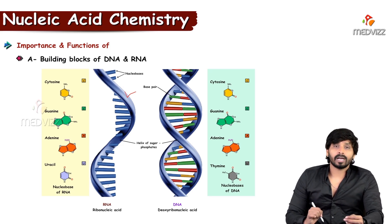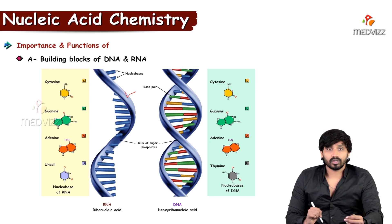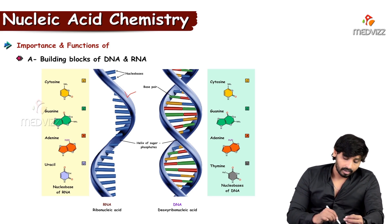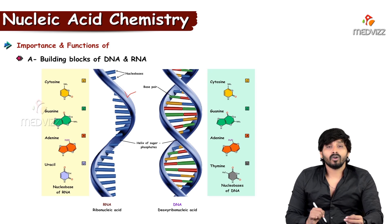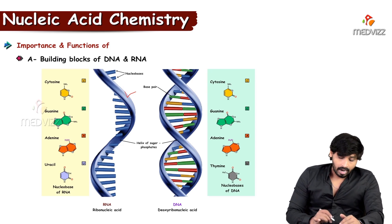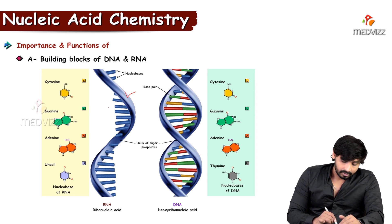In RNA, bases are attached along the backbone of sugar and phosphate. That thread-like structure is made up of sugar and phosphate, with the bases arranged along it.